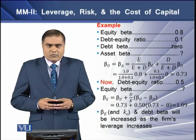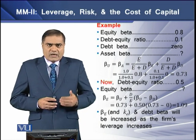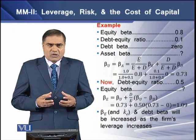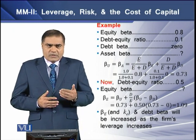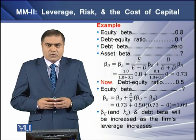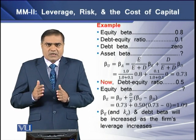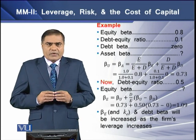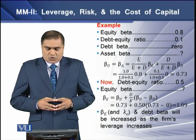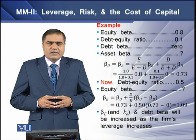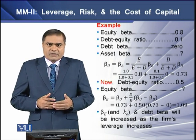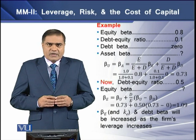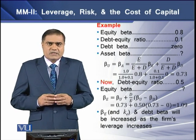Now assume the debt-equity ratio increases to 0.5 from the earlier 0.1. The equity beta or levered beta will equal the unlevered beta plus the additional beta due to debt multiplied by the debt-equity ratio. Putting the values into this model, the levered beta is equal to 1.09. This shows an increase due to leverage, meaning the levered beta, the cost of equity, and the debt beta will all increase as the firm increases its leverage.